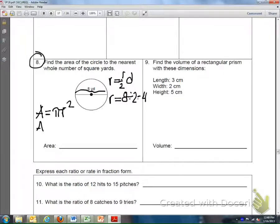So the area of this circle is going to be pi, which is 3.14, times 4 squared. 4 squared is 16.